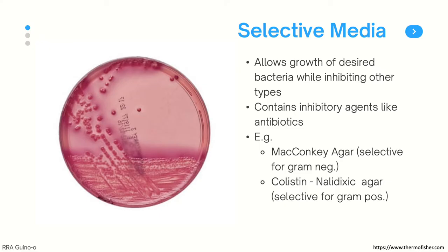We also have colistin nalidixic acid agar, and this is selective for gram-positive bacteria. This kind of agar contains colistin and nalidixic acid, which is inhibitory to gram-negative bacteria.